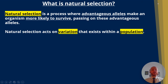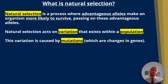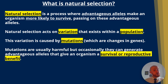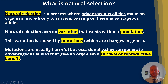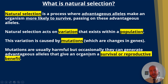Natural selection acts on variation that exists naturally within a population. This variation is caused by mutations — a mutation is a change in the genes. Mutations are usually harmful, but occasionally one means the organism is better adapted to its environment, giving it a survival or reproductive benefit.